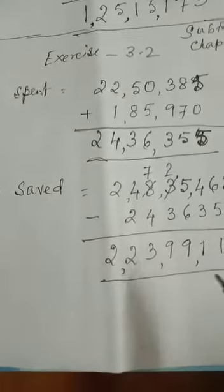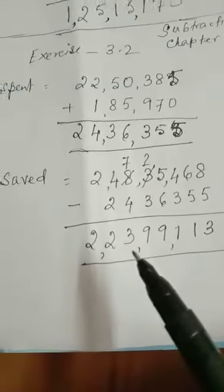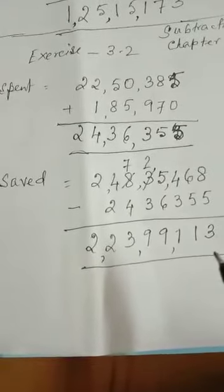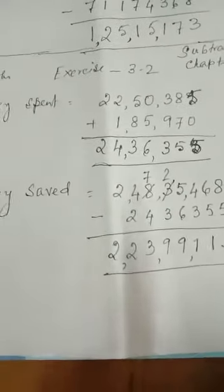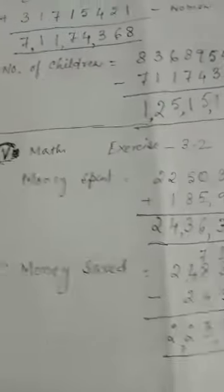Therefore, he saved 2 crore, 23,99,113. Now, next number 9. Again, you read the question from your book.